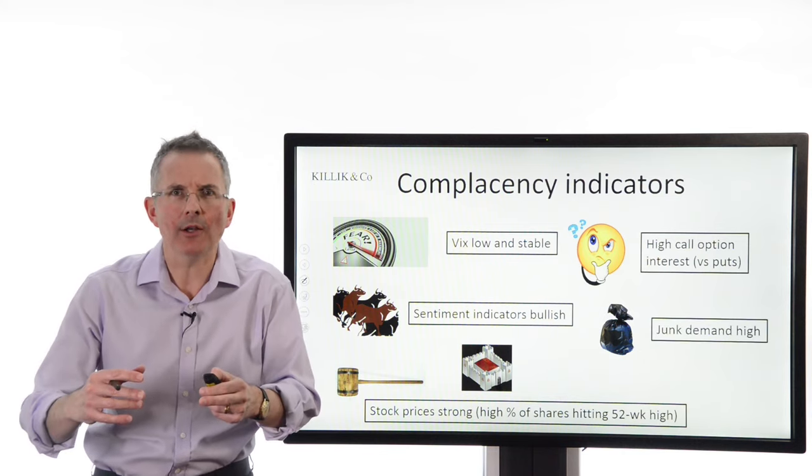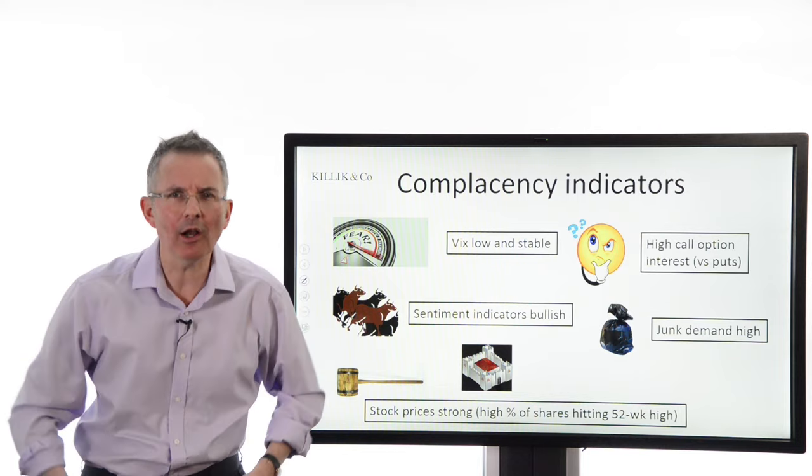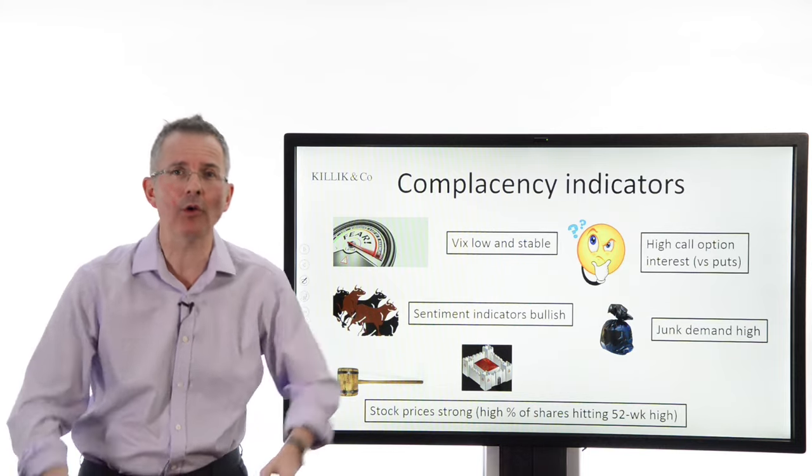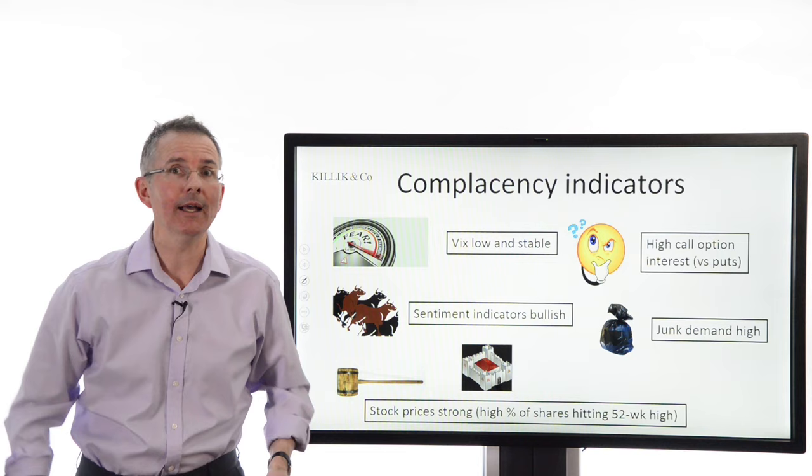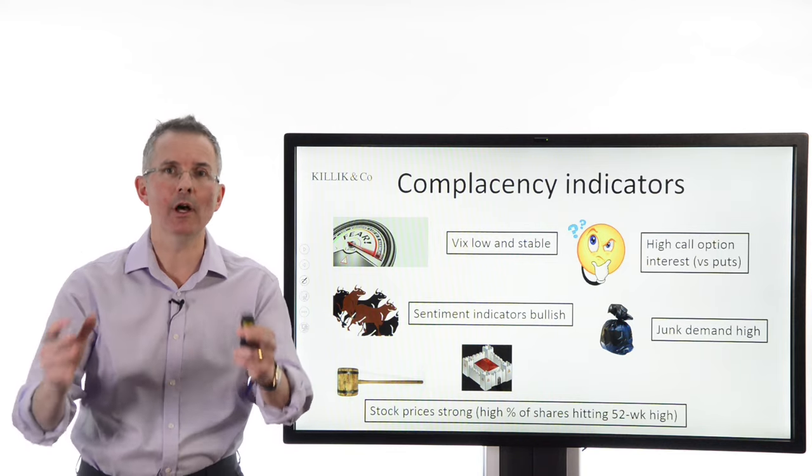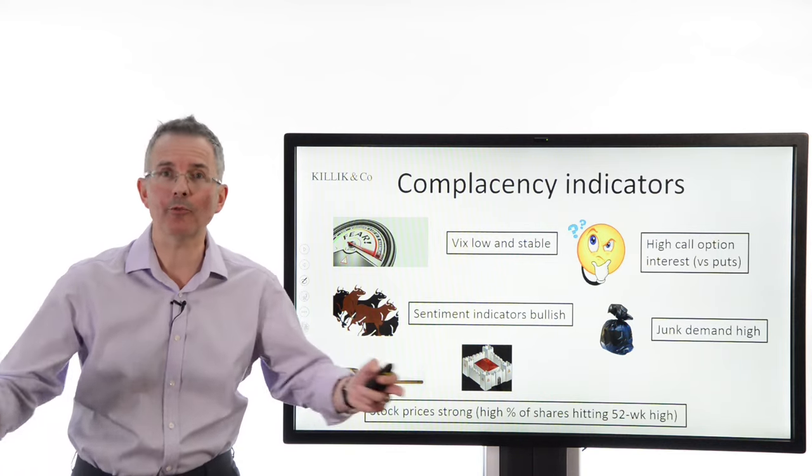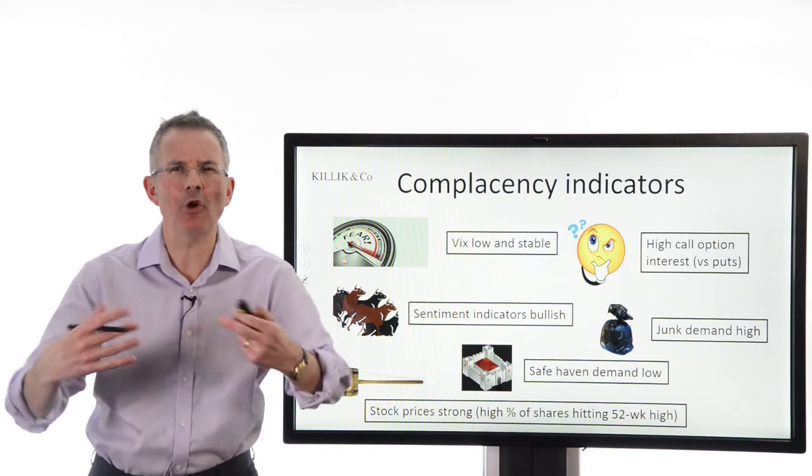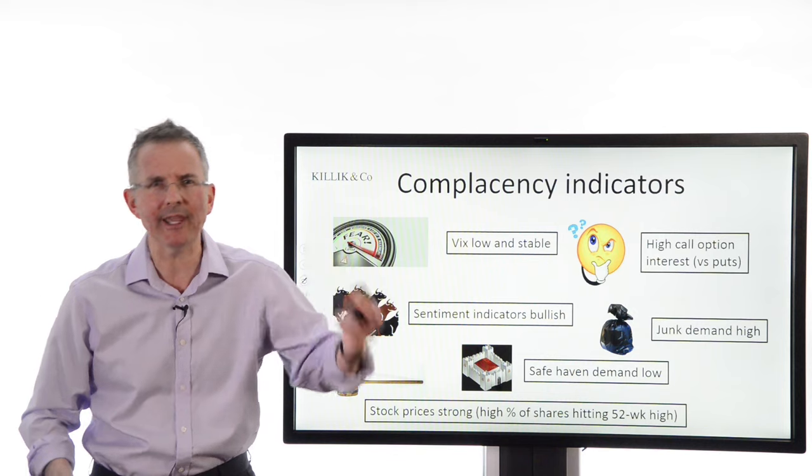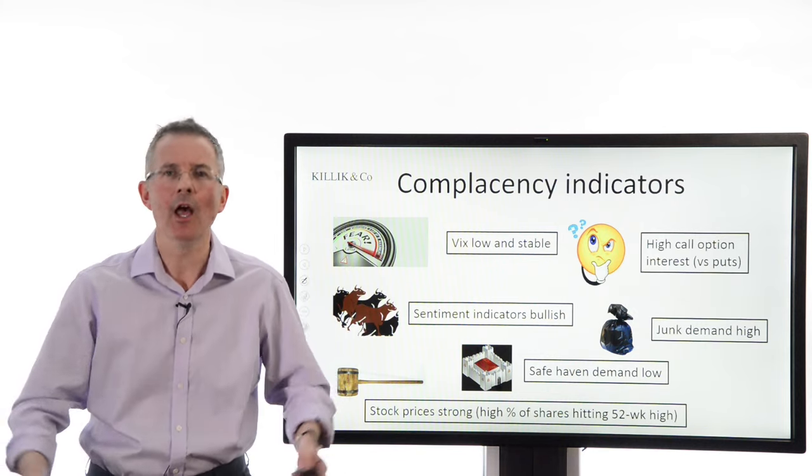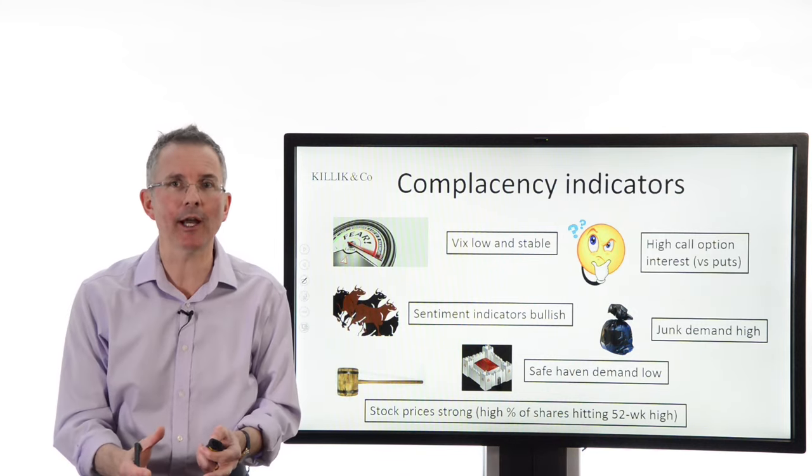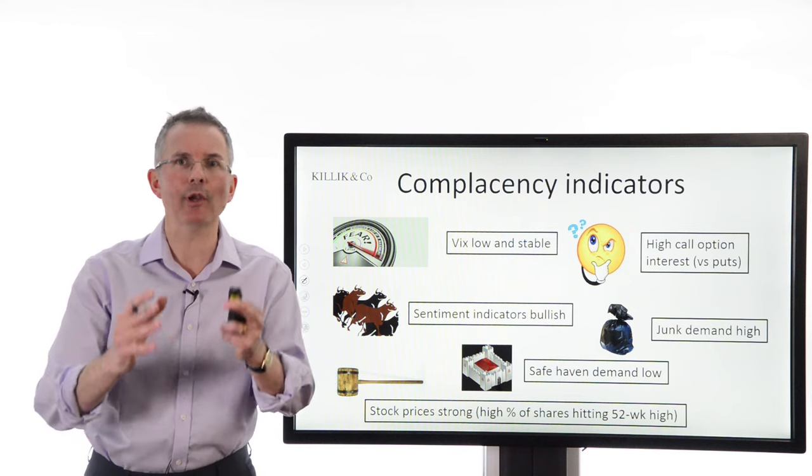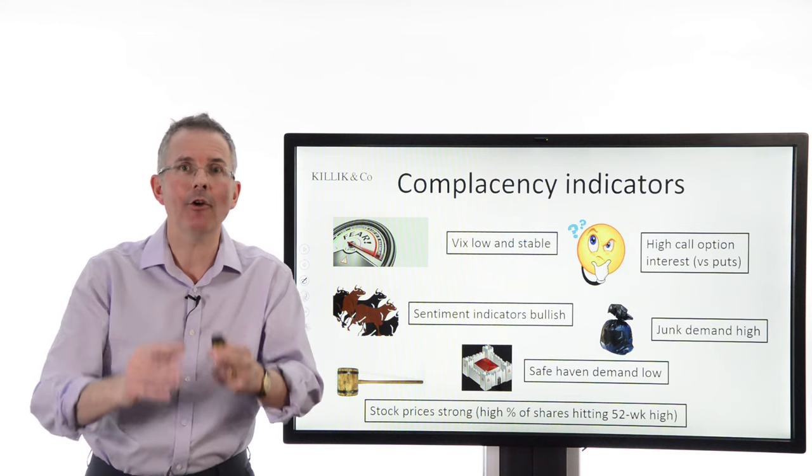Next, junk demand is high. People don't care. They're just gung-ho piling into anything they can get a hold of with a high yield. And that is showing up in demand for low-quality bonds, possibly even equities too. And finally, safe-haven demand is low. People are not interested in boring old treasuries and gilts. They want other things, sexier things. All of those things together can be read by a contrarian as irrational exuberance, a toppy market, time to sell.